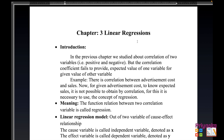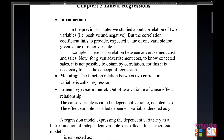Part 1, Chapter 3 is linear regression. In the previous chapter we studied the correlation of two variables, which was positive and negative. But the correlation coefficient failed to provide the expected value of one variable for a given value of the other. For example, there is correlation between advertisement cost and sale, but to find the expected sale for a given advertisement cost, we need to use the concept of regression.